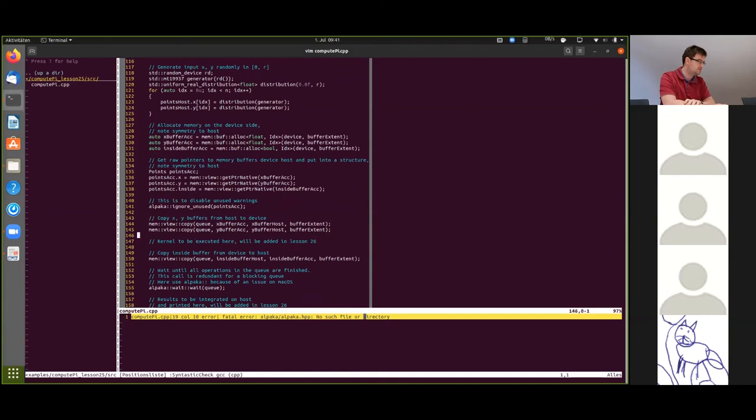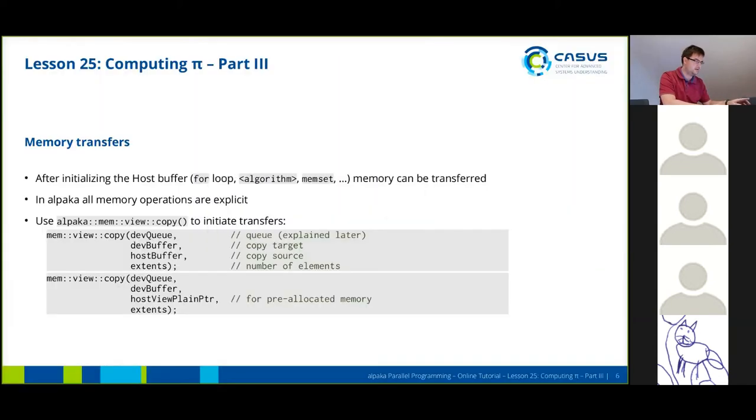Then we're going to copy from the host to the device. We're only copying x and y because the inside part is going to be determined on the device, not on the host. The actual kernel execution would follow here, but we will look at that in the next section. So this is basically all you need to know about memory management in Alpaca. Are there any questions for this part?